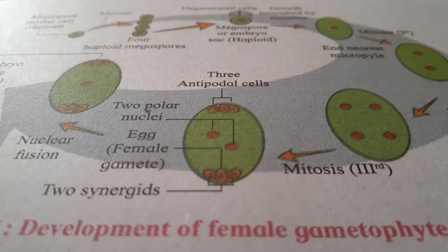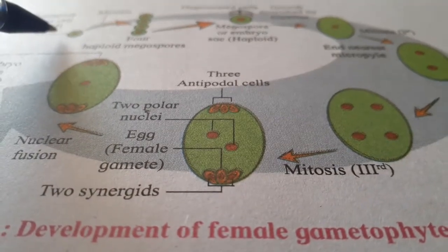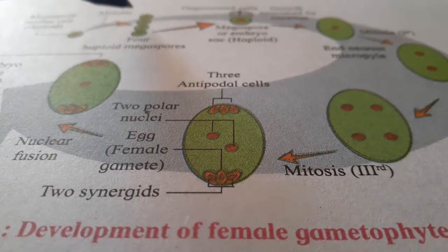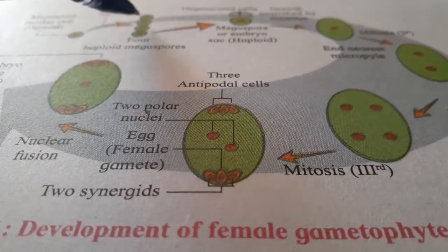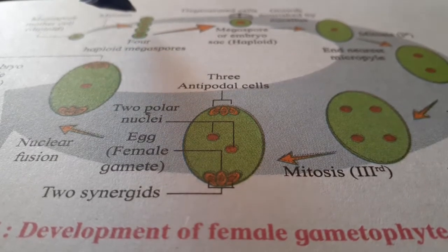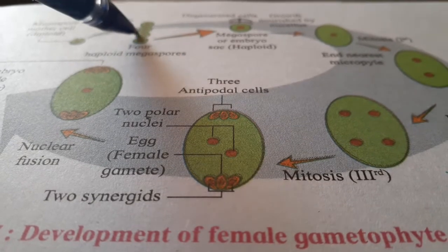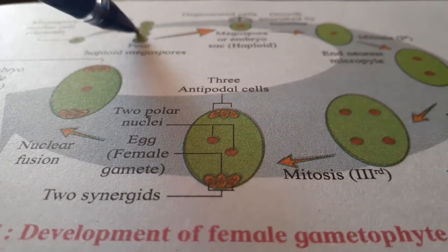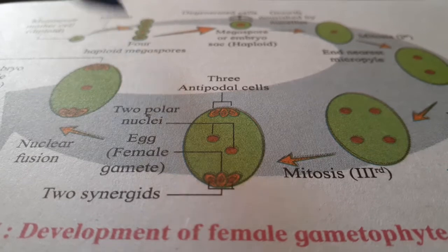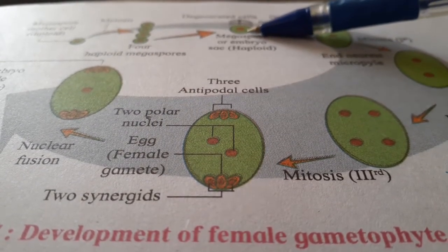The Megaspore mother cell undergoes meiosis and produces a total of 4 haploid megaspores. Out of these 4 haploid megaspores, the upper 3 megaspores disintegrate, and the last lower one undergoes further development.